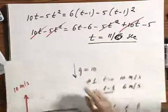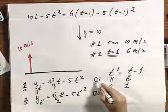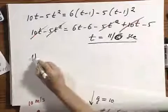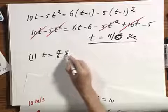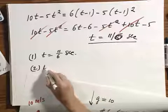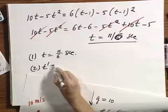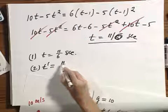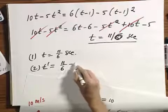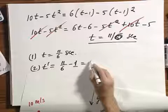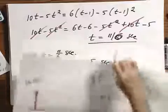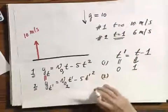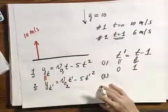So now I go to equation number one. I substitute in equation number one, t equals eleven-six seconds. I go to equation number two, and I substitute in equation number two, t prime equals eleven-six minus one. So that means that is five-six seconds. And I should find, indeed, the two objects are at the same position.